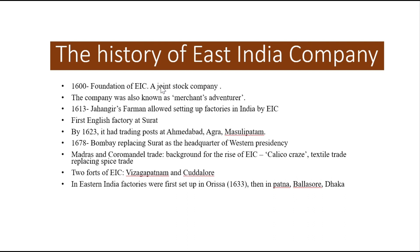The starting point of the East India Company's penetration into Indian trading ports: in 1613, Jahangir allowed a firman — a regulation — which permitted the East India Company to set up factories at various parts of the Indian subcontinent. The first English factory was at Surat, and by 1623, they had trading posts not only in Surat but also in Ahmedabad, Agra, Masulipatnam, and various other cities.